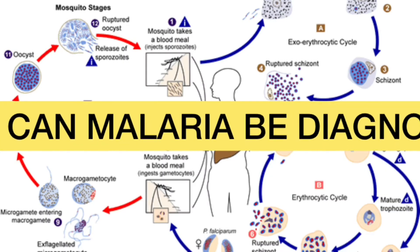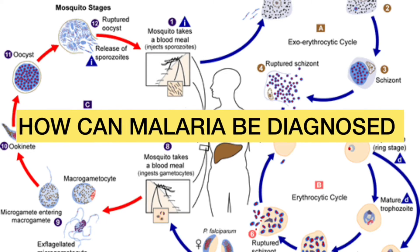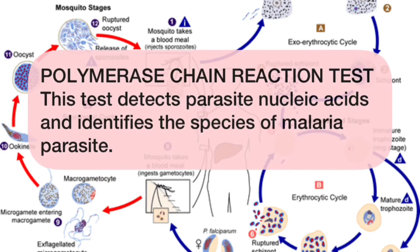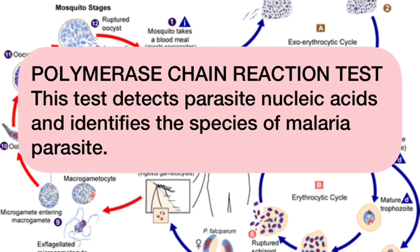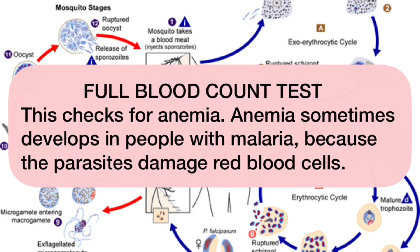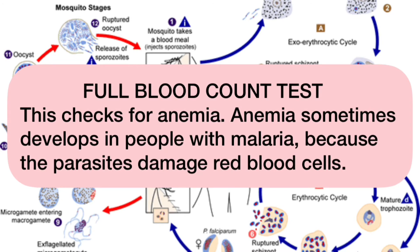The following methods are some of the ways by which malaria can be diagnosed. The blood smear test detects which type of malaria parasite is present and how many parasites are in your blood. We also have the polymerase chain reaction test, which detects parasite nucleic acids and identifies the species of malaria parasite. Thirdly, we have the full blood count test, which checks for anemia. Anemia sometimes develops in people with malaria because the parasite damages red blood cells.